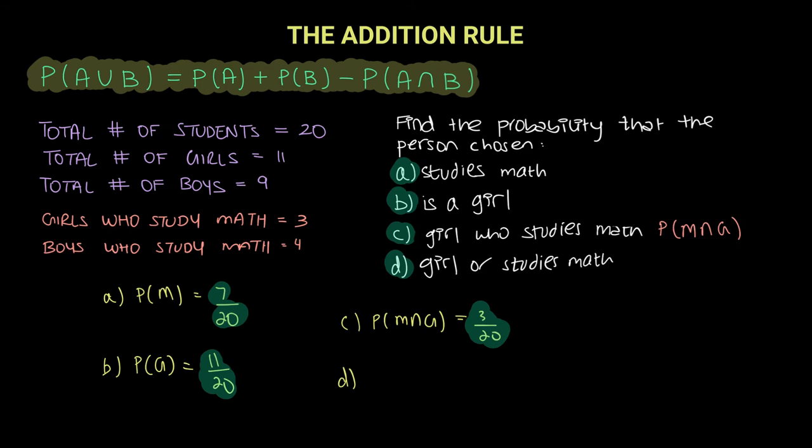Now for the last one it says person chosen is girl or studies math. So now we have the case of our union, which is where the addition rule comes into place. Is math or is a girl? So that means this is the case of union where you have to use the addition rule.